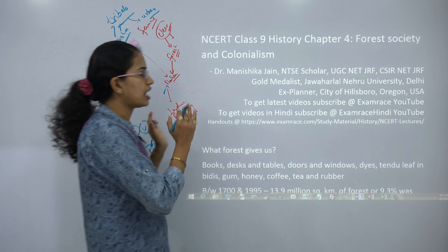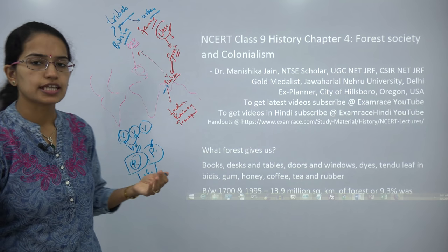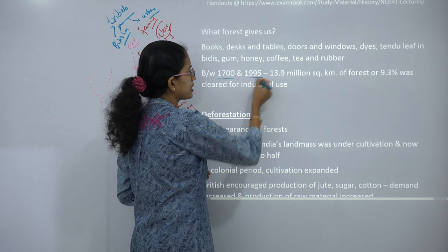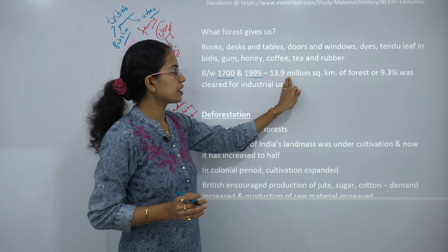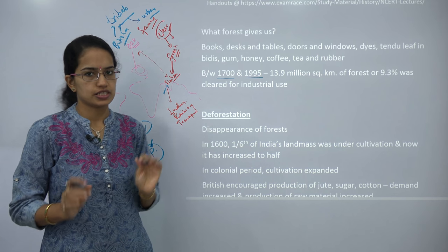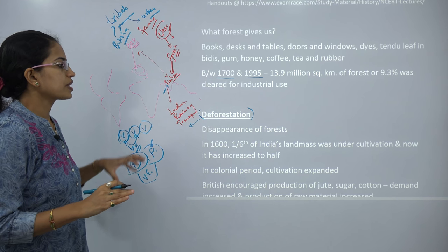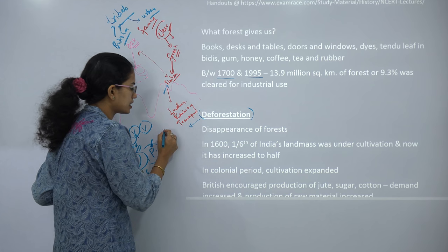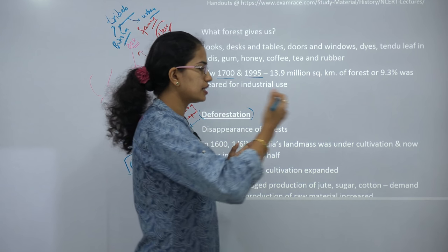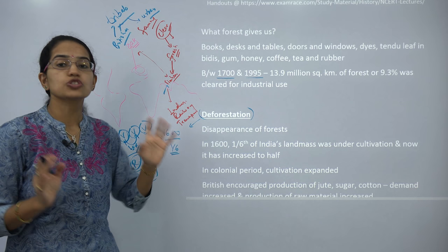Forests are a rich source for an economy — we get lots of products like books, tables, and stairs. But during the period of 1700 to 1995, nearly 13.9 million square kilometers of forest, or 9.3 percent, was cleared for industrial use. In 1600, forest land accounted for nearly one-sixth of the total land area of India, and during the recent years, in a period of around 200 to 300 years, this ratio increased from one-sixth to half of the land area cleared for cultivation.